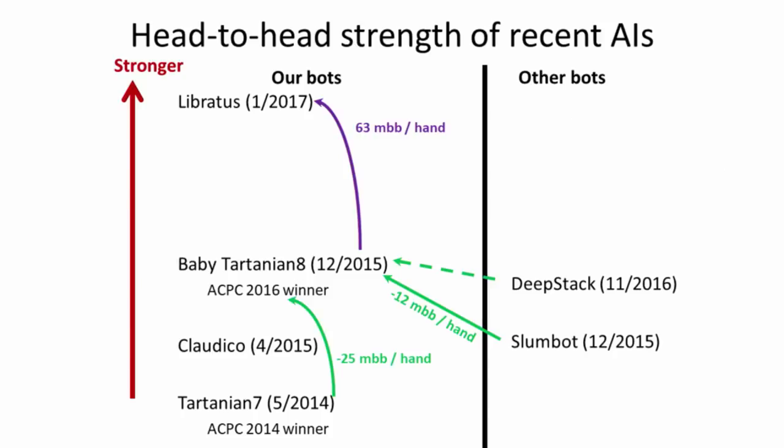And also, in terms of head-to-head performance, these techniques lead to a dramatic improvement. There is a competition called the Annual Computer Poker Competition where researchers who work on imperfect information games get together, make an AI for poker, and play them against each other. Now, the previous best bot is called Baby Tartanian 8. This is our 2016 bot that won the competition. It beat the next closest competitor in the competition by 12 millibig blinds per hand. This is a measure of win rate in poker. And that bot was Slumbot. And it beat the 2014 champion by 25 millibig blinds per hand. There was another AI called DeepStack that came out around the same time that also uses sub-game solving and also has very low exploitability. But in terms of head-to-head performance, it's not able to beat Baby Tartanian 8.